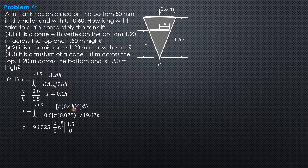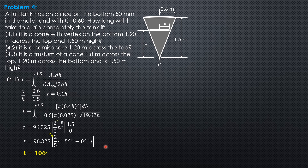What remains is H² over √H, which is H^(3/2). The integral of H^(3/2) is H^(5/2) over (5/2), and the reciprocal of 5/2 is 2/5. So we have 96.325 times (2/5) times [H^(5/2)] from 0 to 1.5. Substituting: 96.325 × (2/5) × 1.5^(2.5) minus 0. This gives T = 106.2 seconds.